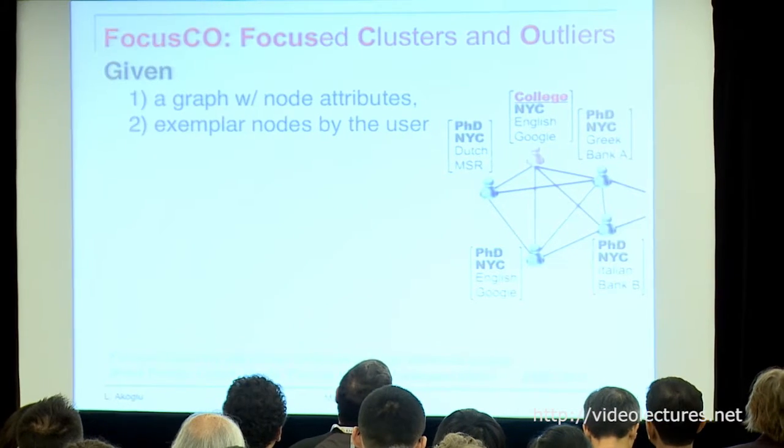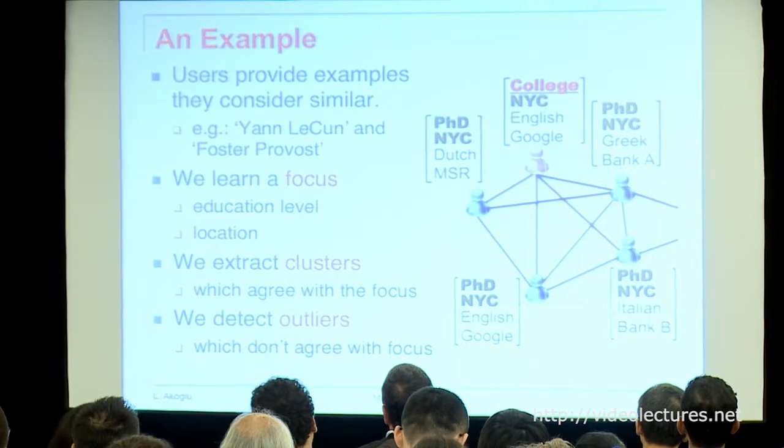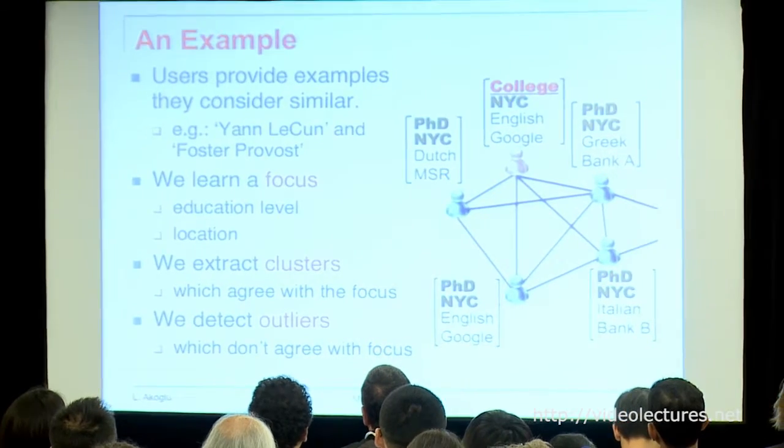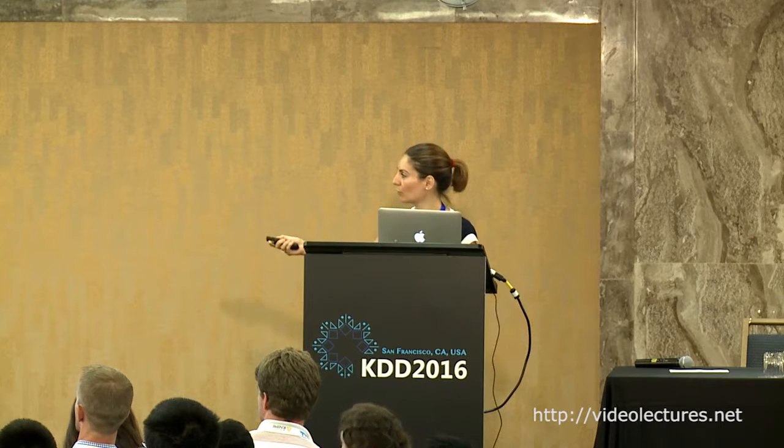More formally, the problem is: we have the attributed network, we have exemplar nodes given by the user as input, we infer their intent, we go to the graph and extract the kind of clusters they're interested in, and also find some outliers. For example, in a collaboration network with information about degree, location, language, and workplace, if somebody gives as examples Yann LeCun and Foster Provost, we learn a focus — that their education level and location are the same — then find clusters where people come together based on location and education level.